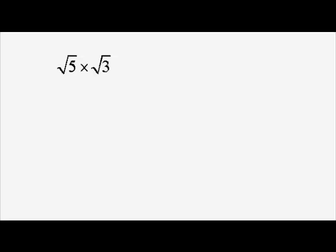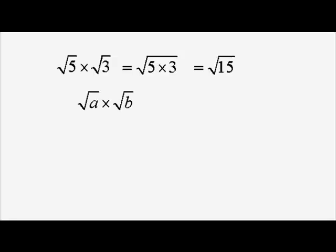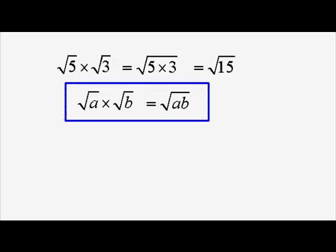In this clip we're going to extend what we know about surds by looking at what happens when we multiply two surds like root 5 times root 3. The rule says we can put them both under the same square root sign: root 5 times 3. In other words, we can rewrite root 5 times root 3 as just root 15. So in general, the rule is that if you've got root A times root B, it's just root AB, and that's a rule that needs to be remembered.